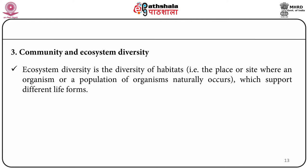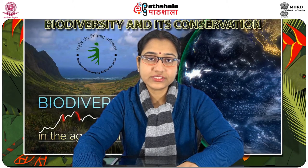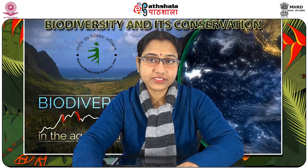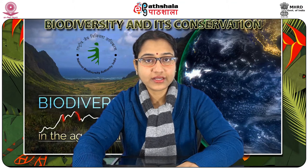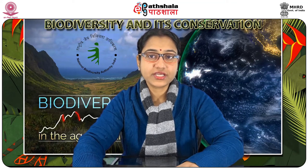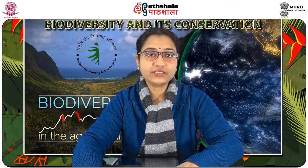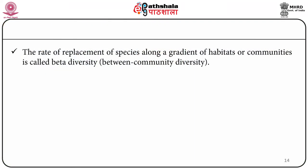Next is community and ecosystem diversity. Ecosystem diversity is the diversity of habitats — the place or site where an organism or population naturally occurs — which support different life forms. Diversity at the level of community and ecosystem exists along three perspectives: alpha diversity, beta diversity, and gamma diversity. Alpha diversity refers to the diversity of organisms sharing the same community or habitat, i.e., within-community diversity. The rate of replacement of species along a gradient of habitats or communities is called beta diversity, i.e., between-community diversity.